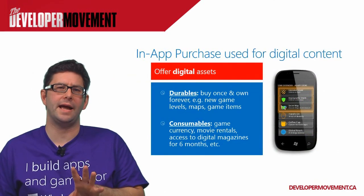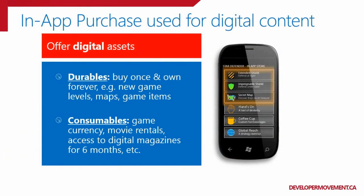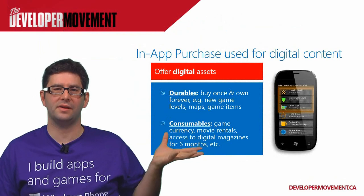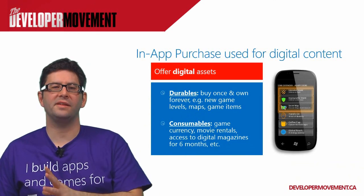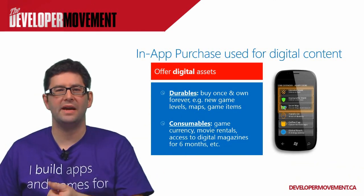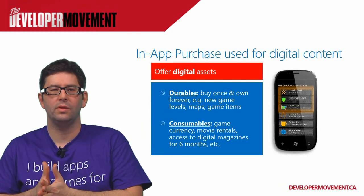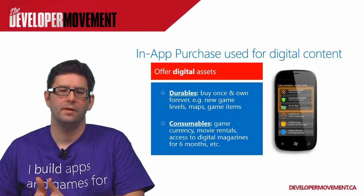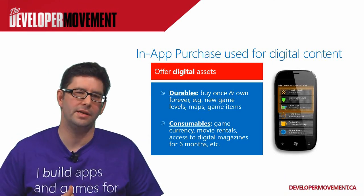There are two different ways to look at in-app purchase content: durable and consumable. Durable means you buy once and own forever — game levels or books are a good example. Consumable means things like bags of gold, magazine subscriptions — things that lapse over time or are only usable in a one-time scenario. We support all those types of things, so regardless of what you're thinking of doing with your in-app purchase capability, you have the ability to take care of that.